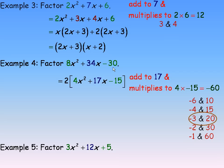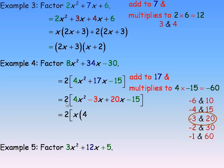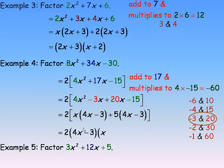We're rewriting the 2 out front. We used negative 3 and 20 to break the 17x down into negative 3x plus 20x, with 4x squared and negative 15 staying the same. In the first two terms there's a common factor of x; in the last two terms there's a common factor of 5. Factoring an x out: 4x squared divided by x is 4x, negative 3x divided by x is negative 3. Factoring a 5 out: 5 goes into 20x, 4x times, and negative 15 divided by 5 is negative 3. What's in the round brackets — 4x minus 3 — is the same in both cases. So the final answer is 2 times (4x minus 3) times (x plus 5). You can expand this out and get 8x squared plus 34x minus 30.